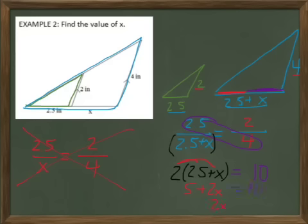Subtracting 5 on both sides would give me 2x equals 5. Then dividing both sides by 2, I would have x equals 5 over 2 or 2.5. This would make the bottom side of that triangle 5, and therefore I know that it is twice the size of the smaller triangle.